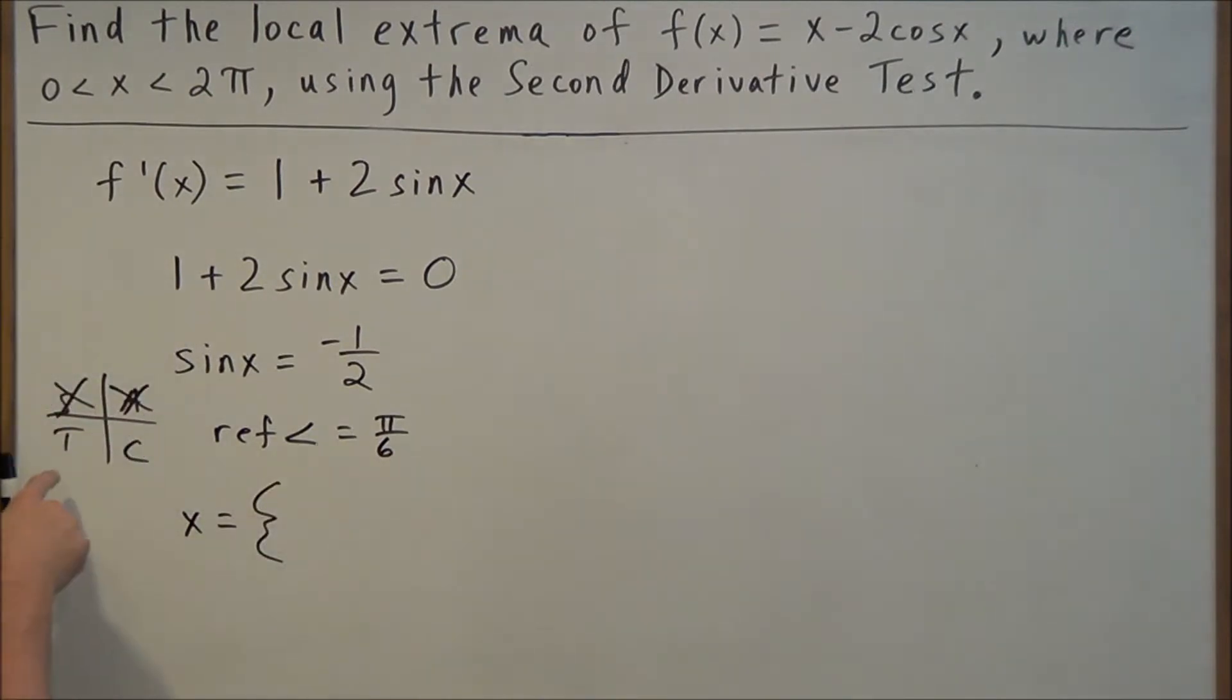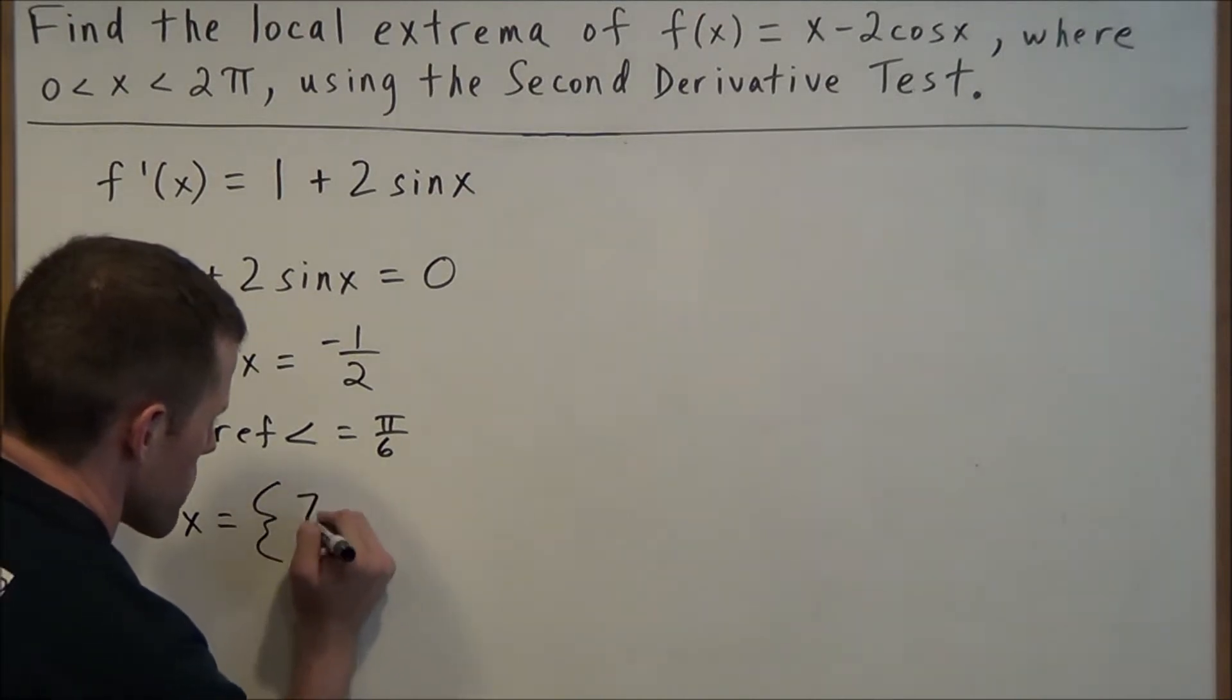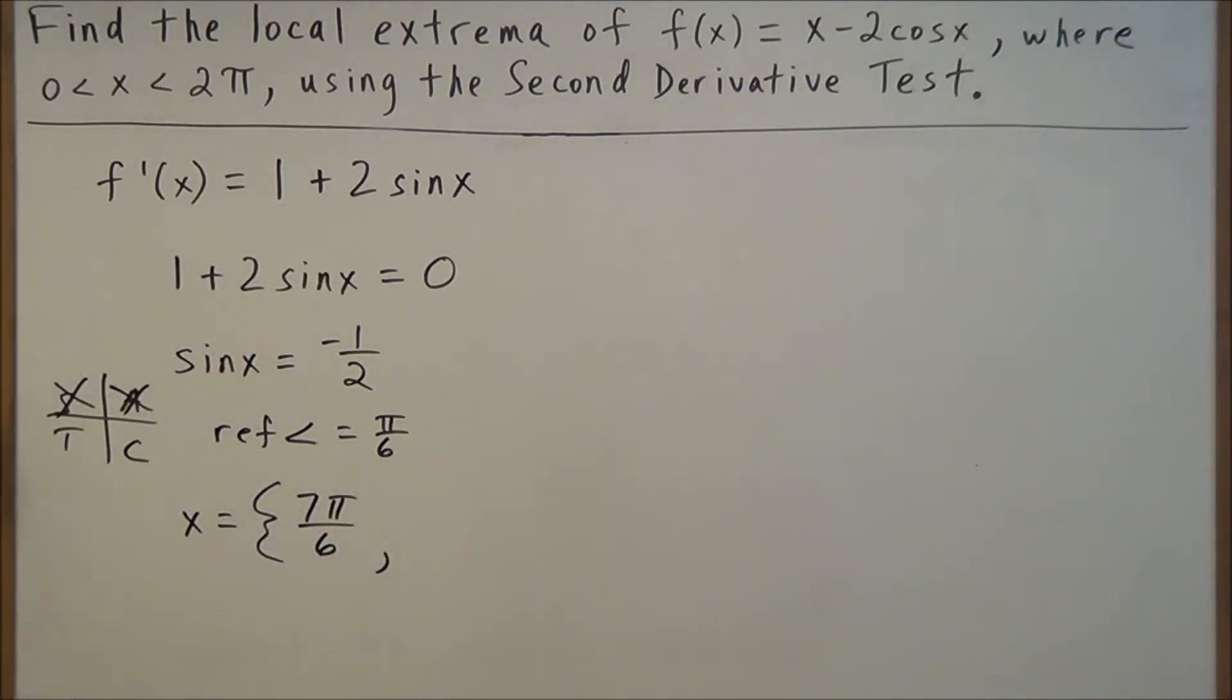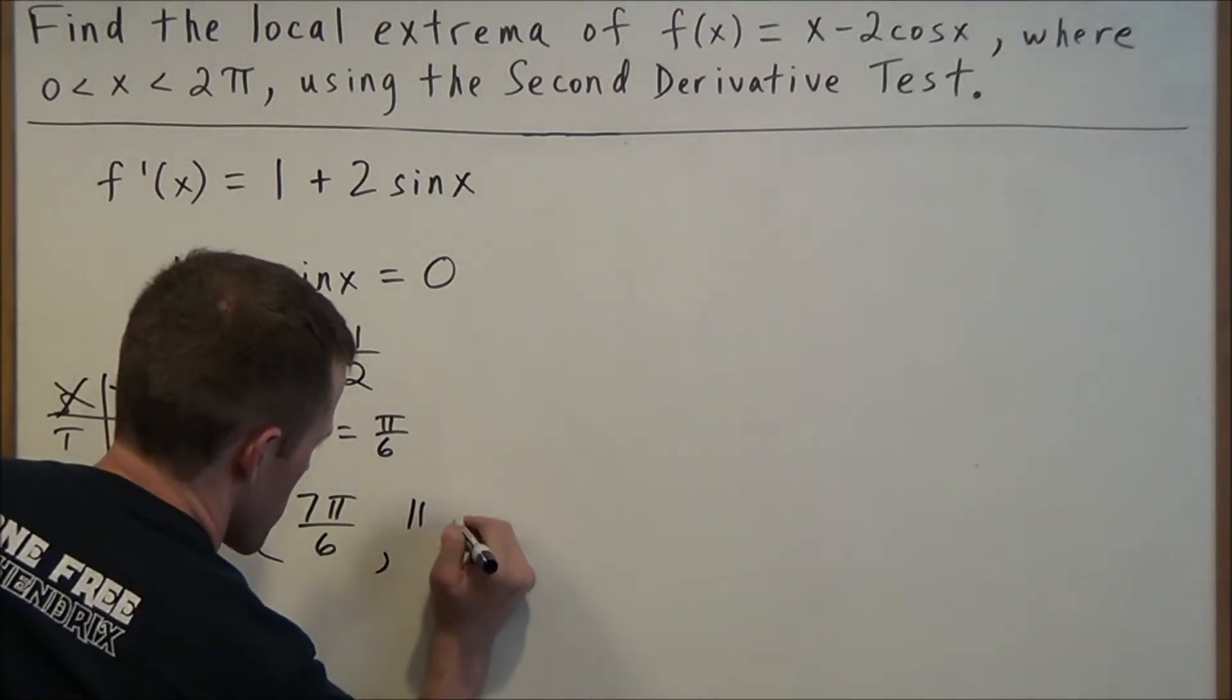Which tells us our solutions here will fall in quadrants 3 and 4. To find our quadrant 3 solution, we're just going to do π + π/6, which will give us 7π/6. And to find our quadrant 4 solution, we'll do 360 or 2π radians minus the reference angle π/6, which gives us 11π/6.